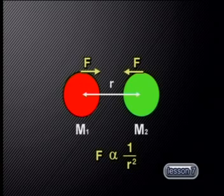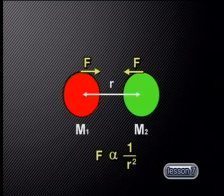Next, let's find out what Newton's law of universal gravitation says about the way that the distance between two particles or objects affects the gravitational force. The law states that the gravitational force of attraction is inversely proportional to the square of the distance between the particles.